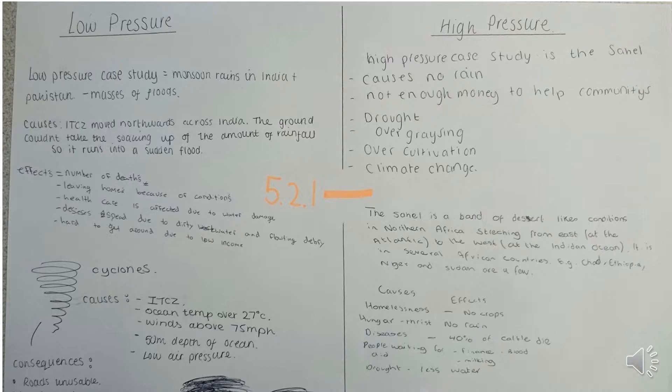5.2.1 is also about weather — weather consequences, low pressure and high pressure. Think about low pressure: it may blow, it may rain, it may snow. Low pressure is not particularly nice weather. High pressure — high and dry, nice, clear sky. High pressure is nice weather.